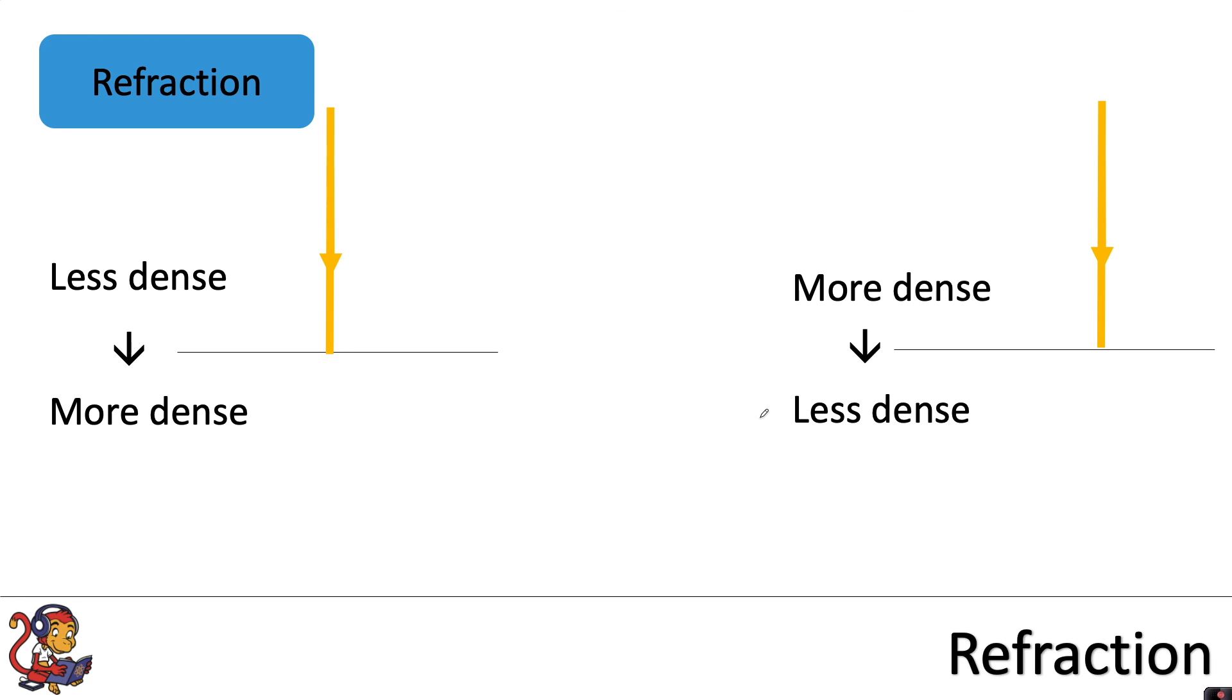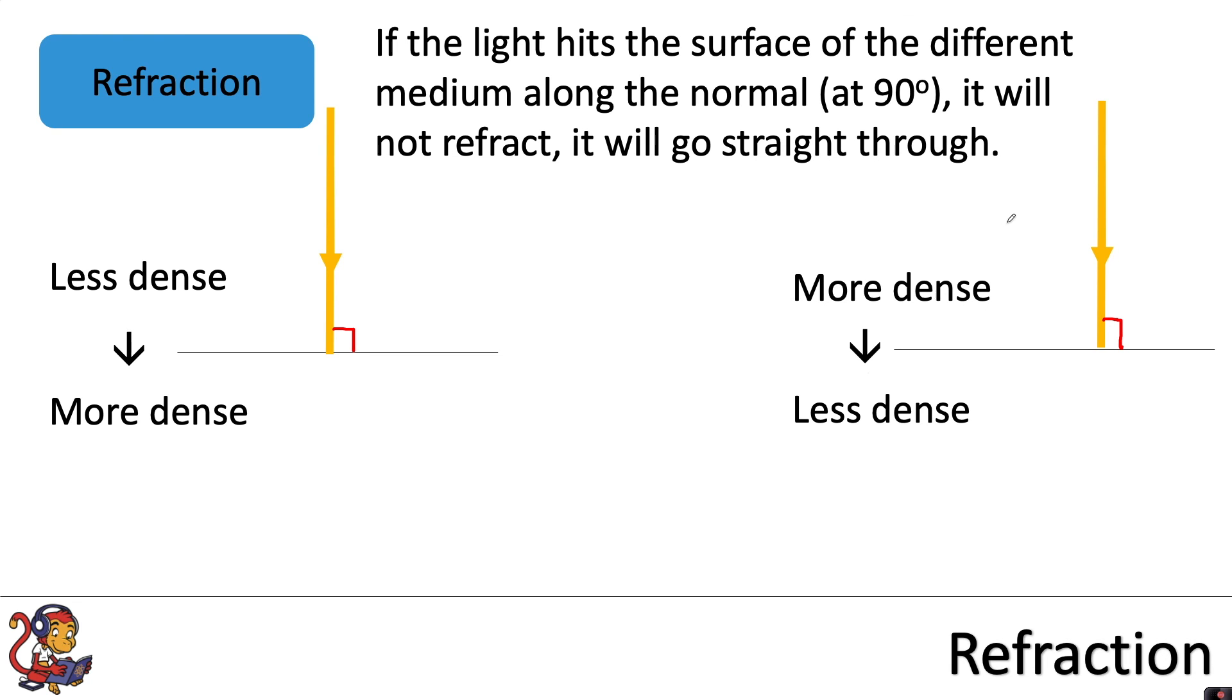Finally, you can get a situation whereby the incident ray is hitting the surface along the normal line at 90 degrees to the surface. And in this case, the ray will not be refracted. So if the light hits the surface of the different medium along the normal line at 90 degrees, it will not refract and it will go straight through, travelling still along that normal line into the next medium.